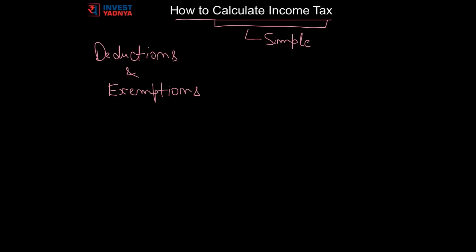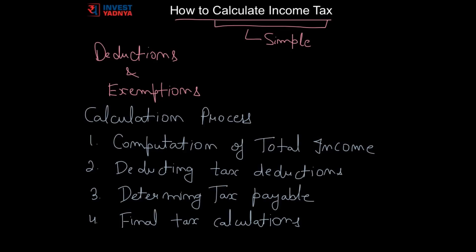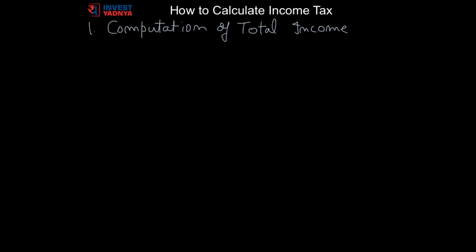Income tax calculations require following process: computation of total income by deducting all legal allowances, deducting valid income tax deductions, determination of tax payable based on existing tax slabs, and final tax calculation to be paid based on TDS paid. First, let's understand how to calculate the total income. Total income is the sum of all sources of income that you have earned in a financial year.